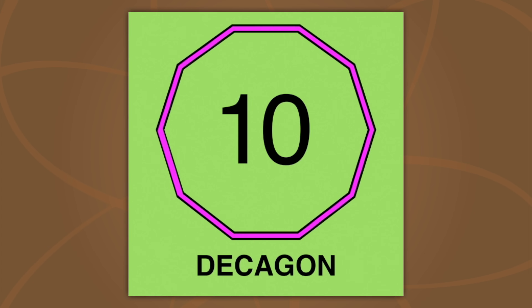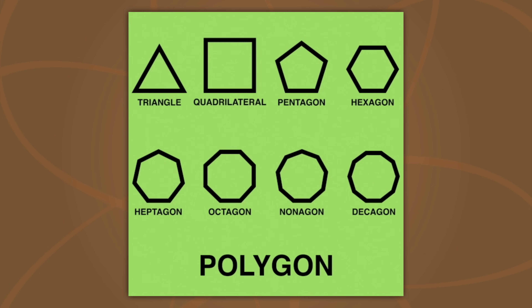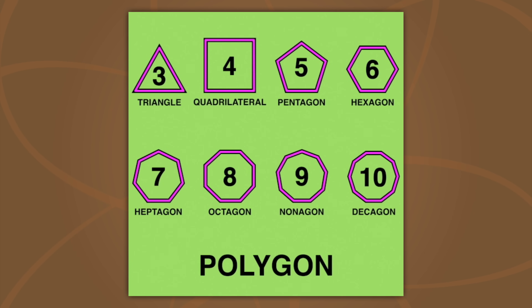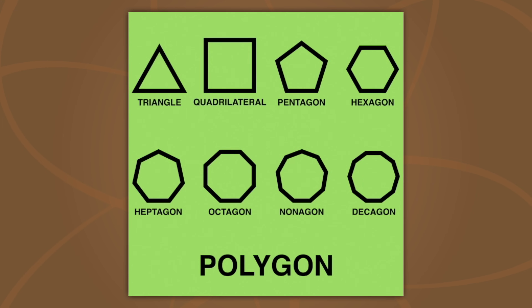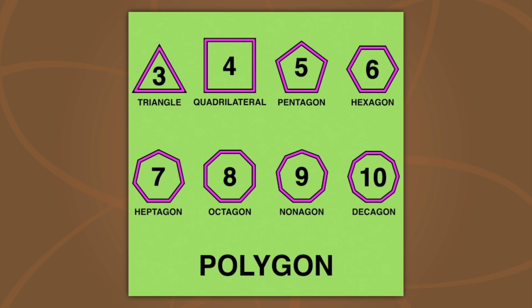A polygon is a shape with lines that connect. The number of sides tells us the name of the shape.